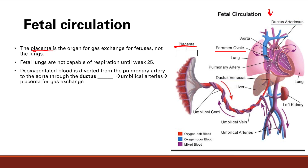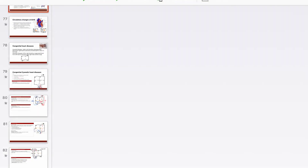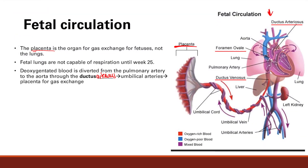So deoxygenated blood coming from the veins goes from the veins to the right side of the heart to the pulmonary artery, and it's going to be diverted to the aorta through the ductus arteriosus. That's the ductus arteriosus — it makes total sense because it connects the pulmonary artery and the aorta. So this is our ductus arteriosus, taken from the pulmonary artery to the aorta.